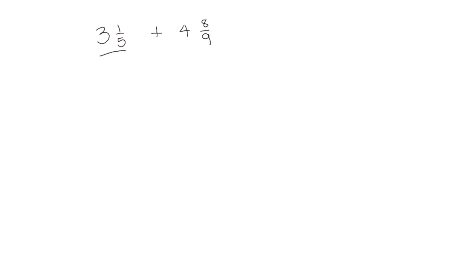So let's start with 3 and 1 fifth. 3 and 1 fifth is a little bit more than 3, so let's round it to 3. 4 and 8 ninths is almost 5, so let's round that one up to 5. When we do an estimate, instead of using straight lines to indicate an equal sign we use wavy lines to show that it's about 8. So the estimate of our sum would be 8.